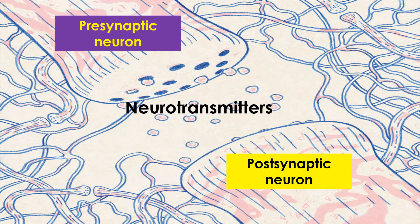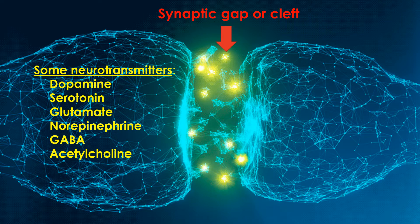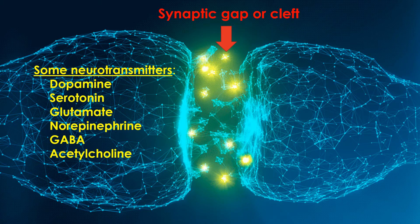The chemicals that are passed from the pre-synaptic neuron to the post-synaptic neuron are called neurotransmitters, and there are hundreds of different kinds. When a neuron fires, an electrical signal travels from one end of the neuron to the other, and then some neurotransmitters are released into a space called the synaptic gap. Different kinds include dopamine, serotonin, glutamate, norepinephrine, GABA, and acetylcholine.